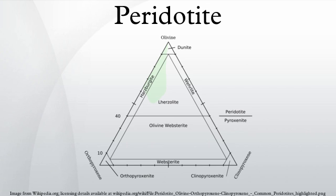Cumulate peridotites are also formed in komatiite lava flows. Basaltic magma is formed from lherzolites in the mantle. Once the magma moves out, it leaves harzburgites behind in the mantle. However, early-formed crystals in basaltic magma can also form harzburgite within the mantle.